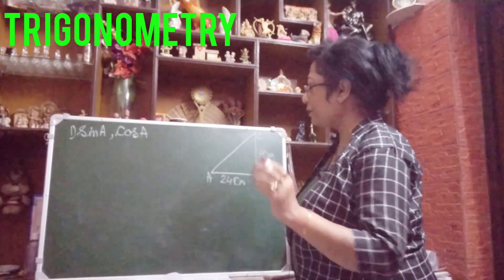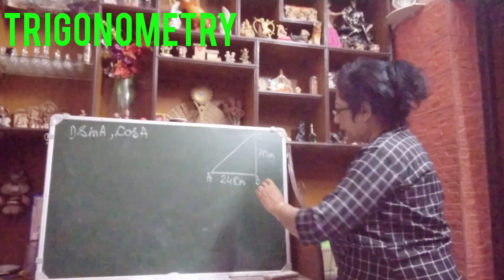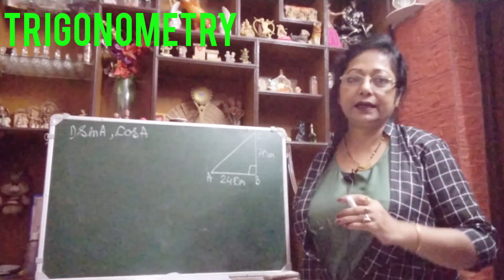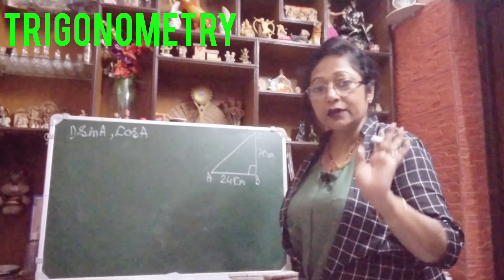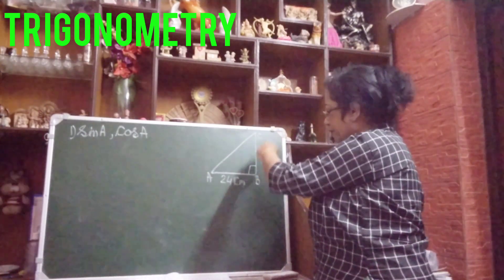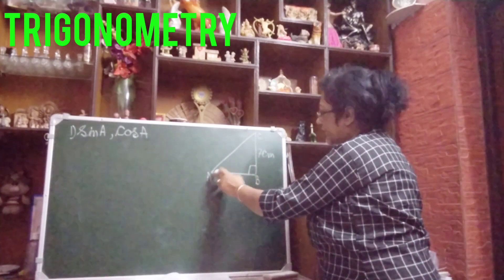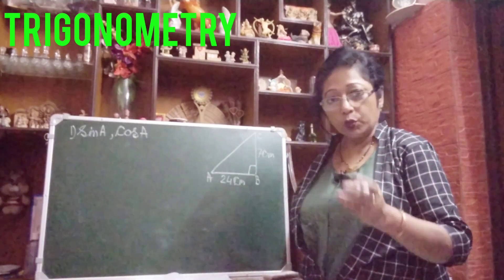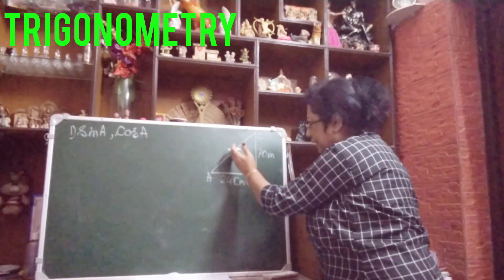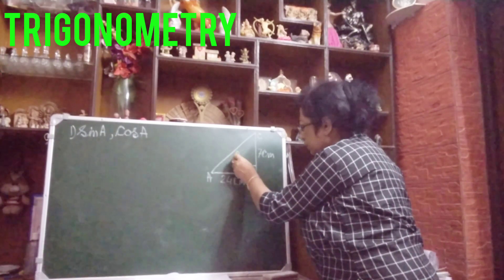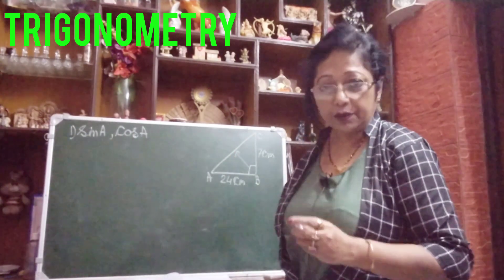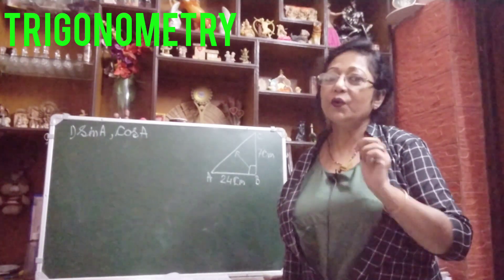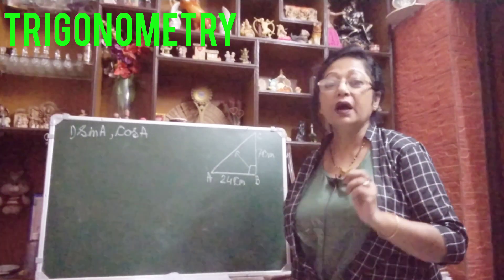Our first sum: I have drawn one right angle triangle. The right angle is here — angle B is 90 degrees, that is the right angle. Two sides are given: the perpendicular BC is 7 centimeters and the base AB is 24 centimeters. The hypotenuse AC — which is the opposite side of the right angle — that measurement has not been given. So all of you know how we can find that: we have to find it with the help of the Pythagoras theorem.